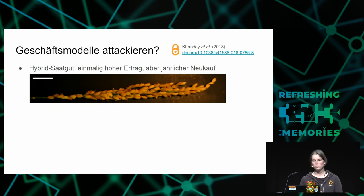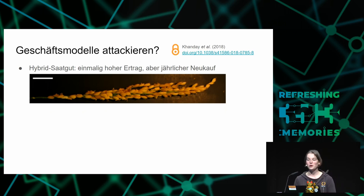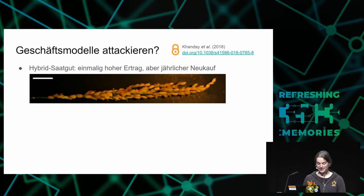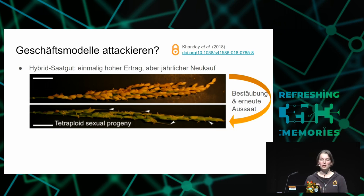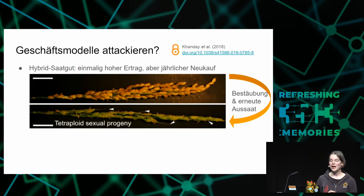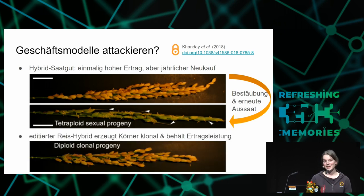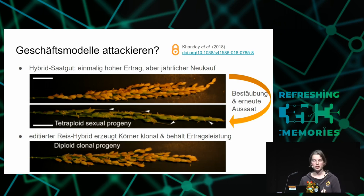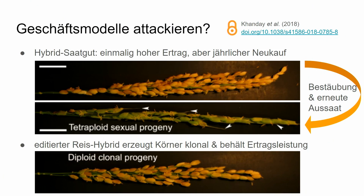This is also important economically. Seeds are currently a recurring cost — you have to buy them every year. One example is rice, which should be seeded using the wind. Normally you should be able to take part of a good yield and regrow it. Recently edited rice actually allows this, because classically, gene-edited rice does not allow reseeding. This allows the greatly increased yield to persist over many generations.